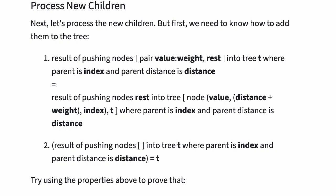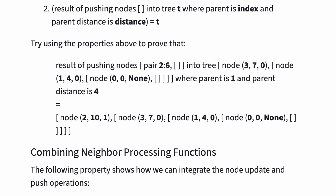Next let's process the new children, but first we need to know how to add them to the tree. Property one says that the result of pushing nodes pair(value, weight) and rest into tree t, where parent is index and parent distance is distance, is equal to the result of pushing nodes rest into tree node(value, distance plus weight, index) and t, where parent is index and parent distance is distance. Property two says that the result of pushing empty nodes into tree t where parent is index and parent distance is distance is just t. Try using the properties above to prove that the result of pushing nodes pair(2,6) into tree node(3,7,0), (1,4,0), and (0,0,none) where parent is 1 and parent distance is 4 is equal to the stack node(2,10,1), (3,7,0), (1,4,0), and (0,0,none).